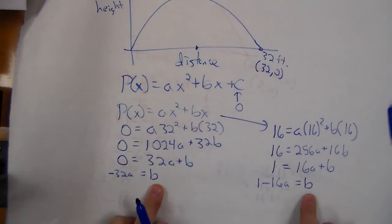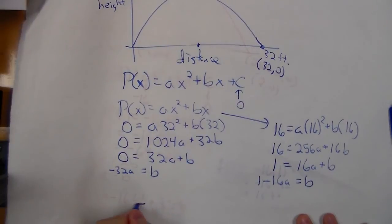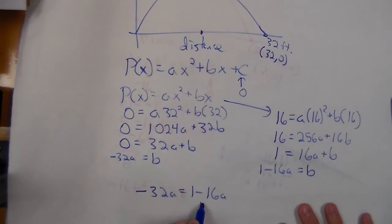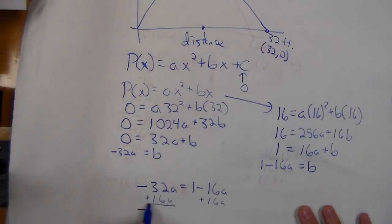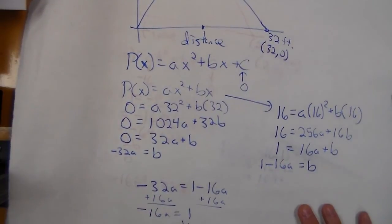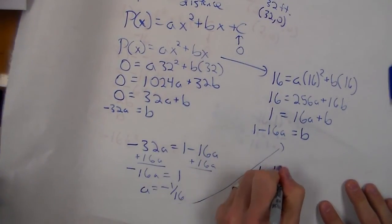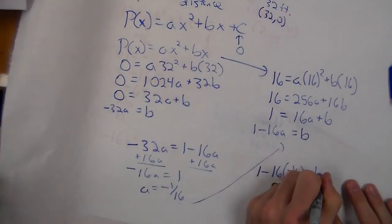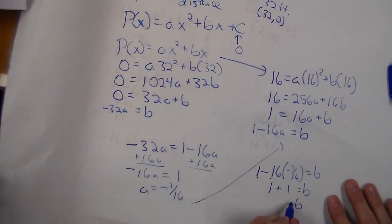Here's my two equations, both have b. If I set these terms equal to each other, because they both equal b, -32a = 1 - 16a. I now get a = -1/16. So now if I need b, I can substitute in: 1 - 16(-1/16) = b. I get b = 2.